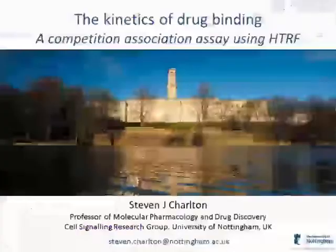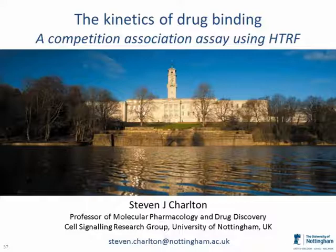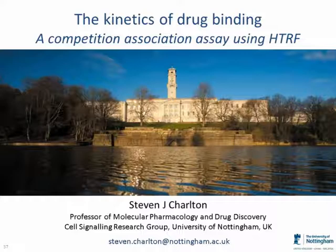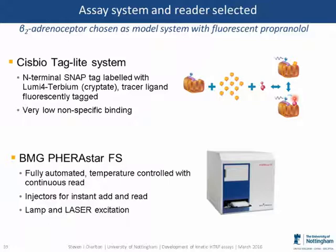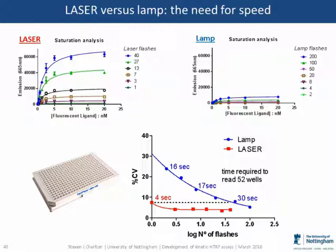Thank you, Catherine. I'm going to finish now by talking about assay development utilizing both SysBio TagLite and PHERAstar to get a kinetic association assay using HTRF. To refresh our requirements: we really wanted something with a continuous read in a 384-well format. We utilized the beta-2 adrenoceptor as our model system, and the tracer ligand is a fluorescently labelled propranolol. The first thing we needed to achieve was the fastest read time possible, because our assay format involves adding reagent into a well, taking an immediate read, moving to the next well, and cycling back to reread each well — so speed defines either the number of wells we can read per plate or the time difference between readings for each well.